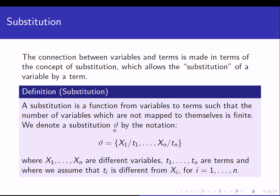We denote a substitution theta by the notation: theta = {x1/t1, x2/t2, ..., xn/tn}. Here x1 through xn are distinct variables and t1 through tn are terms, and we assume that each ti is different from the corresponding xi. So we are binding or substituting x1 with t1, x2 with t2, and so on up to xn with tn.